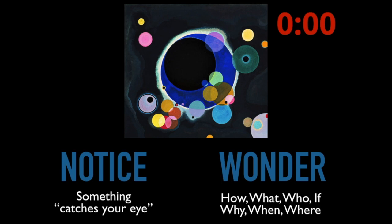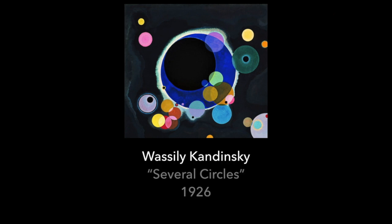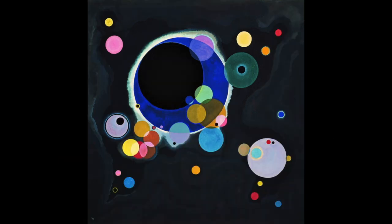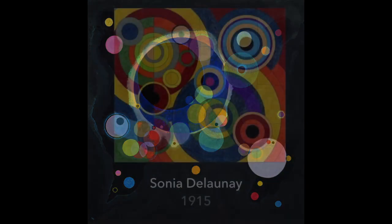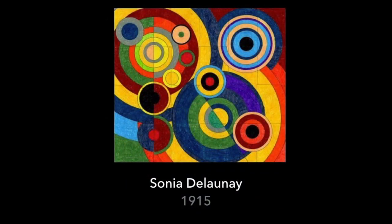This painting was made by a man named Vasily Kandinsky in 1926. He titled it Several Circles. In this project, we're going to wonder if shapes like these, or these by Sonia Delaunay, might actually represent numbers.